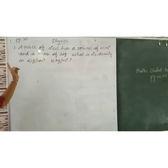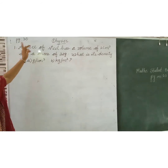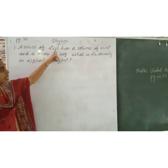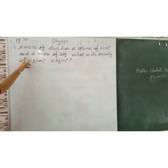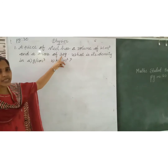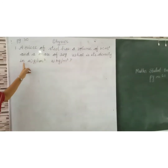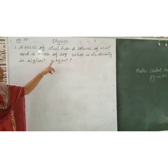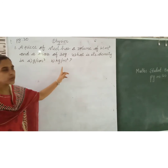This is the example problem from book page number 30. First question: A piece of steel has a volume of 4 centimeter cube and a mass of 32 gram. What is its density in (A) gram per centimeter cube, and (B) kilogram per meter cube?